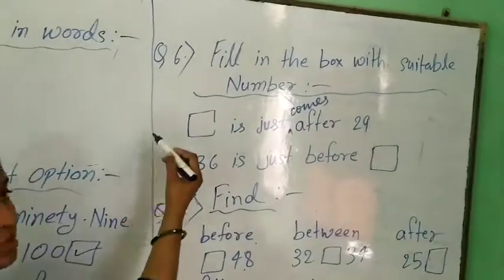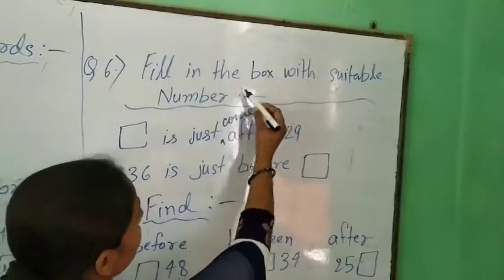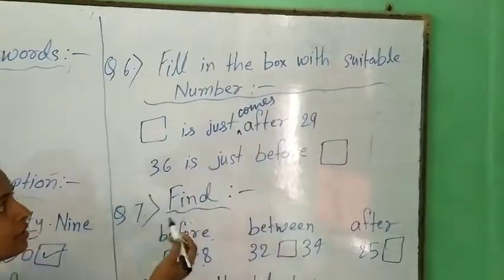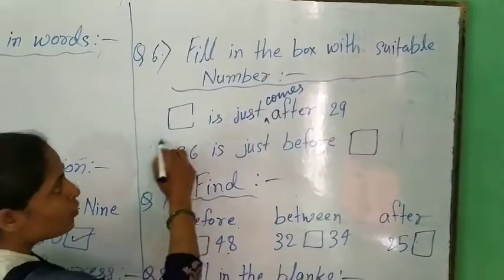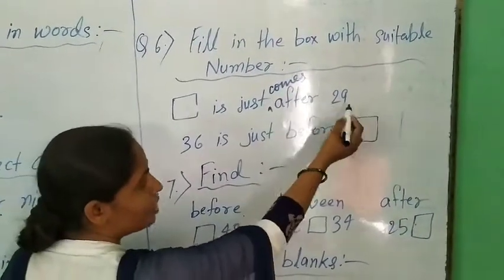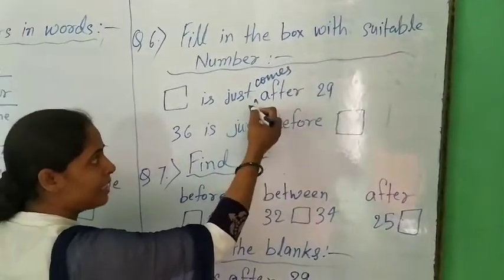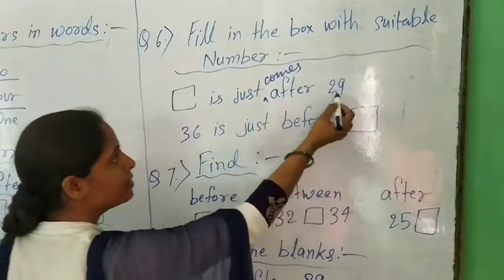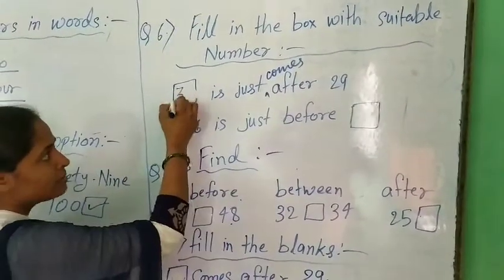Fill in the boxes with suitable number. What comes just after 29? What comes just after 29? 29, it means 30.